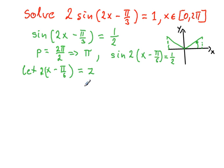So the domain for x runs from 0 to 2 pi. We have to make the adjustment for domain for the new variable z. So when x is equal to 0, then the value of z is negative pi over 3. So z belongs to the interval negative pi over 3.